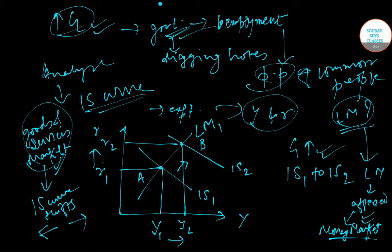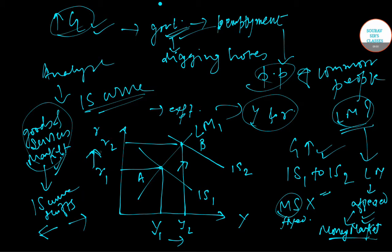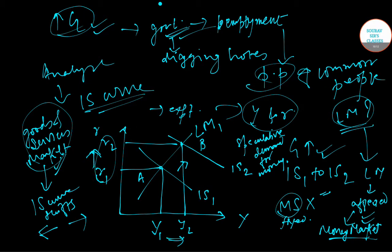The reason the interest rate rises is that the money supply is not changing — it remains constant — so the total money demand cannot increase. The attempt to hold more money will raise the interest rate to reduce the speculative demand for money. At the new equilibrium point B, the rate of interest must rise sufficiently so that net money demand remains unchanged even at a higher level of income.